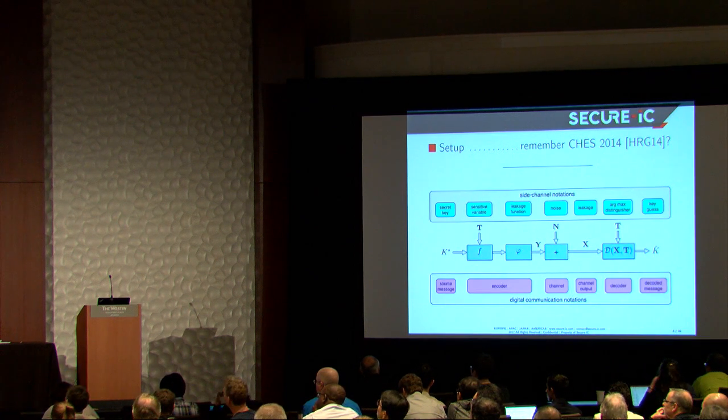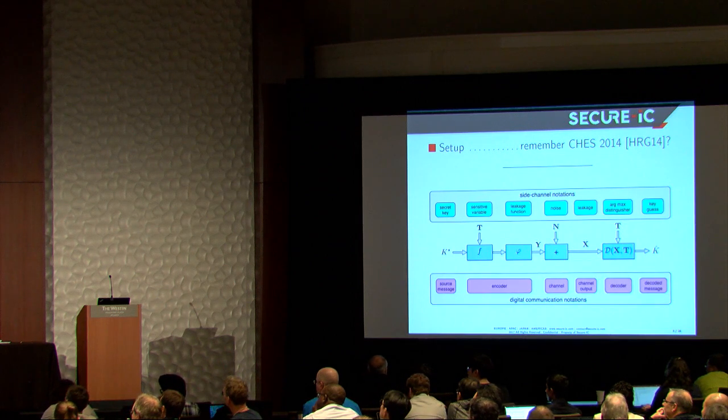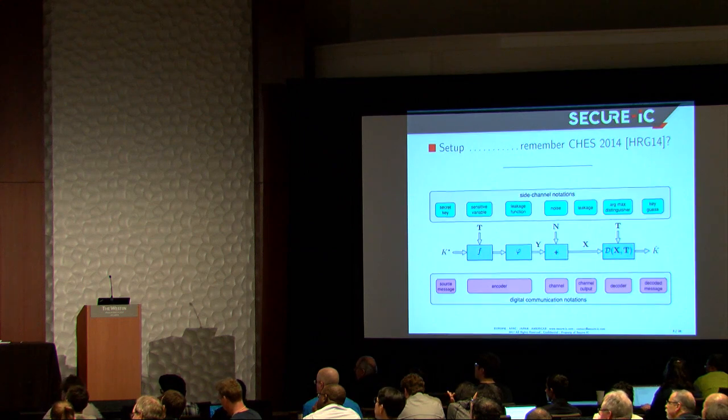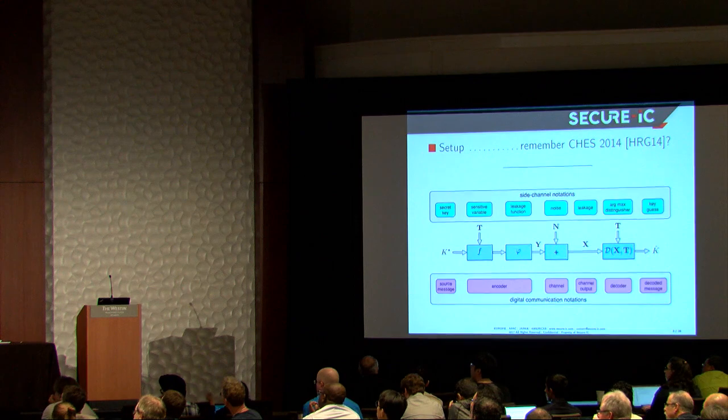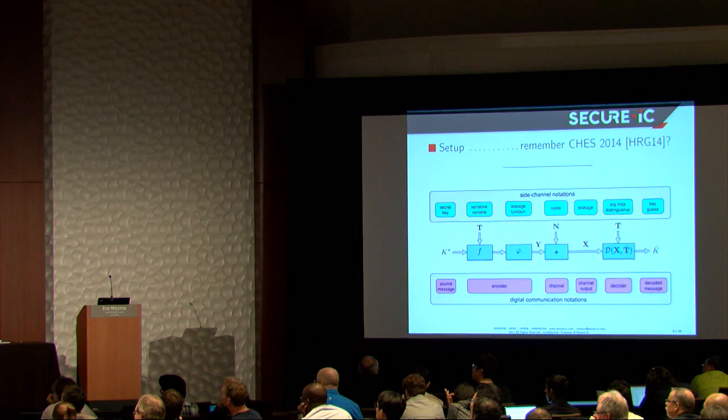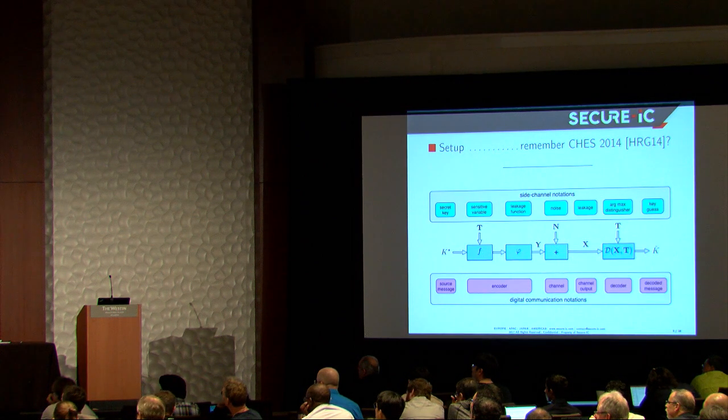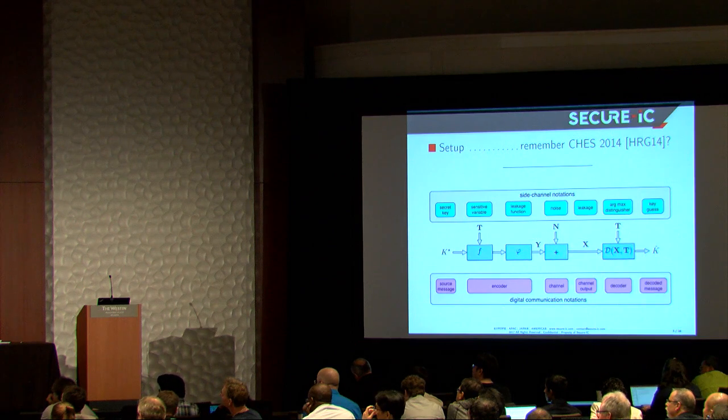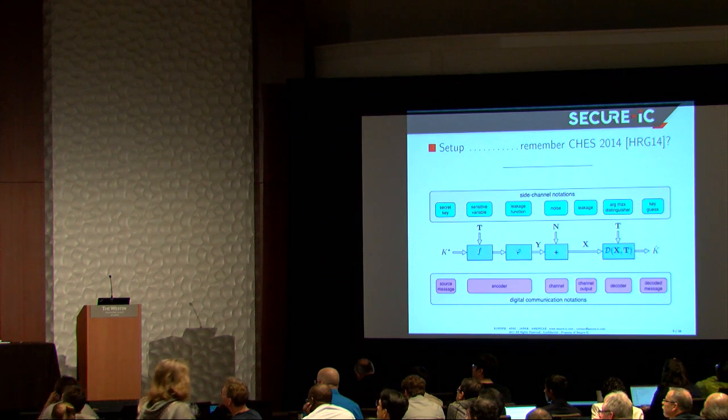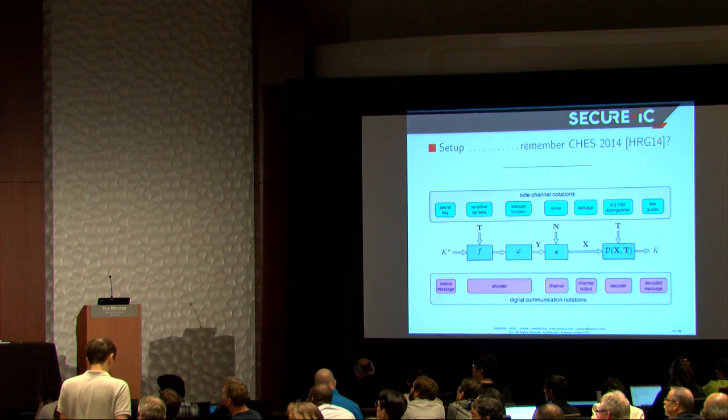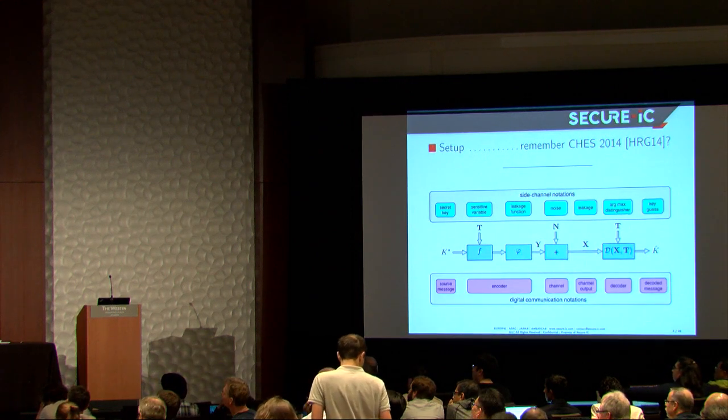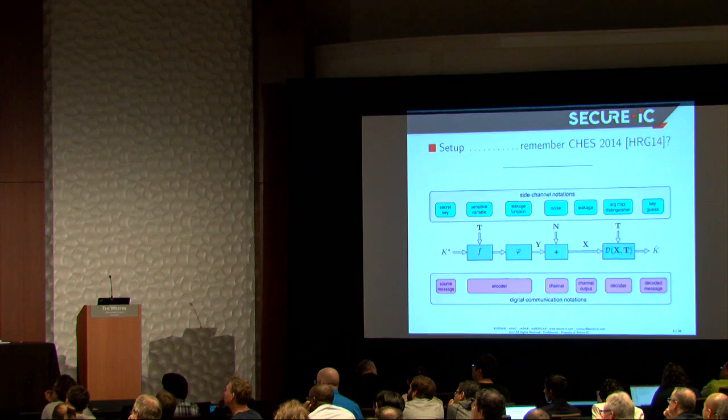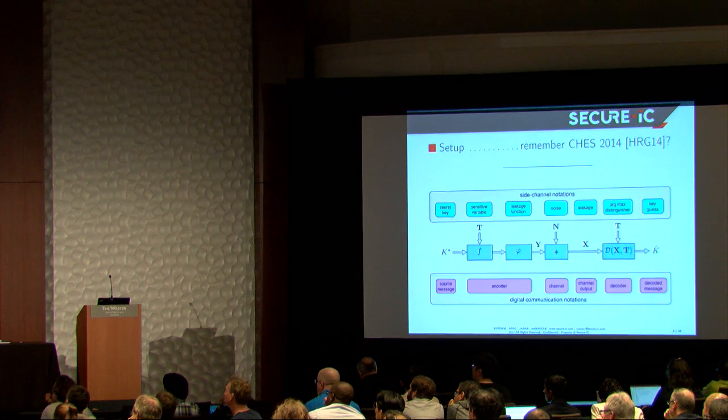Let's take the example of the Hamming weight. So like this is maybe the add-round key, S-box, the Hamming weight, and then we have some noise which is added when we do the measurement. And the job of the attacker or evaluator is actually to extract the key, to estimate the key using some decoding function. So clearly, this is not meant to be an ideal communication channel because there might be some countermeasures there, and the noise is something we don't know.